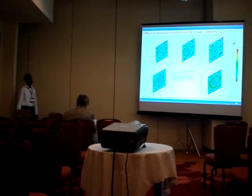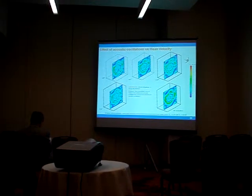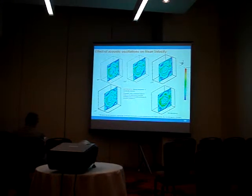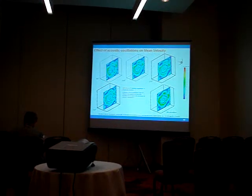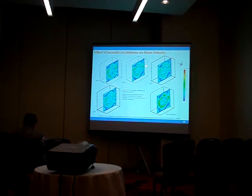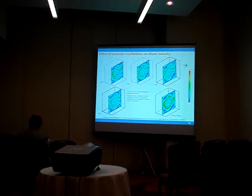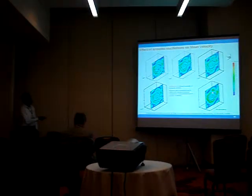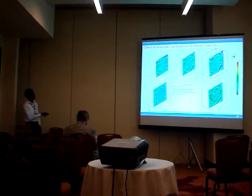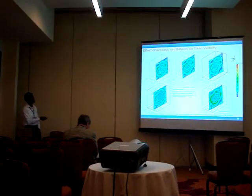Now we will see the effect of acoustic oscillation on mean velocity. This plot shows the 3D mean velocity view. From this plot, you can see that the mean velocity reduces in the presence of acoustic oscillation compared to the case where there is no acoustic oscillation. A mean velocity of 20 m per second in the absence of acoustic oscillations is reduced to 14 m per second in the presence of acoustic oscillations.